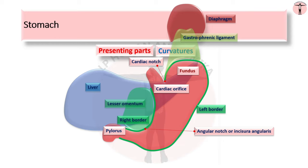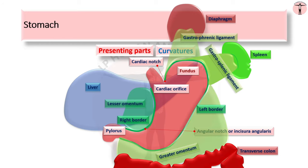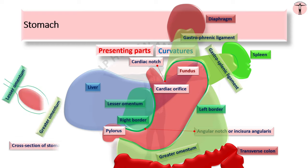The greater curvature gives attachment to three ligaments: the gastrophrenic ligament, extending from the fundus to the diaphragm; the gastrosplenic ligament, extending from the upper part of the greater curvature to the spleen; and the greater omentum, extending from the lower part of the greater curvature to the transverse colon. The two layers of the lesser omentum at the lesser curvature split to enclose the two surfaces of the stomach, then meet at the greater curvature and continue to form these three ligaments. Together, these form the peritoneal relations of the stomach.